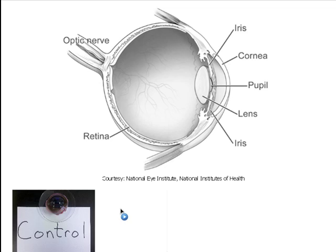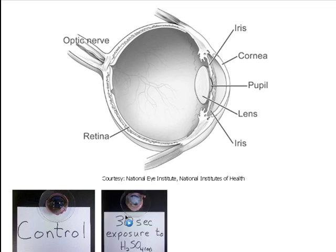We're going to talk about three different potential scenarios. In the first scenario, you have an exposure to the sulfuric acid — it gets splashed in your eyes, and nobody is helping you get across the room to the eyewash station. So by the time you manage to stumble across the lab and get to the eyewash fountain, it's about 30 seconds.